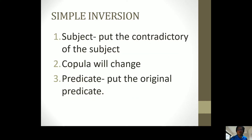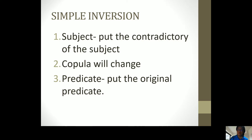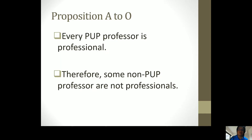First, we have simple inversion. The subject becomes the contradictory of the subject. Your copula will change. Your predicate will be the original predicate. So we're not going to interchange places here — the subject will not be put into the predicate, but the subject will become the reciprocal of its own.